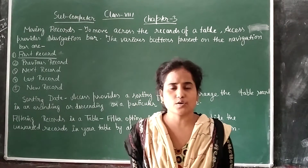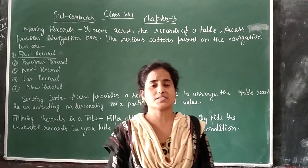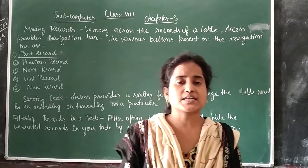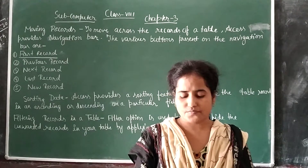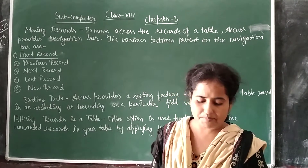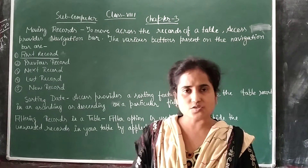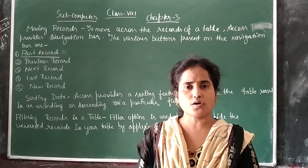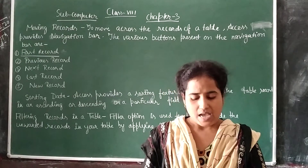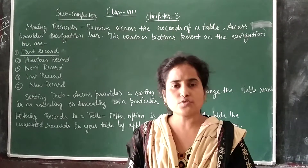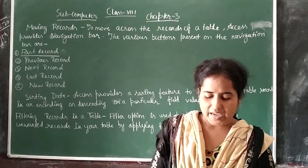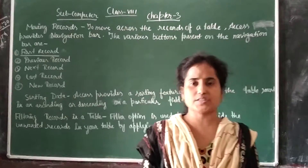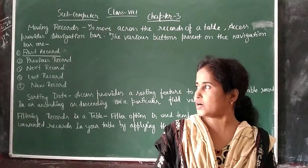Okay students, I hope you all understand this. Try to learn all the shortcut keys given in your book. For example, press Ctrl+F to find data, Ctrl+S to save the database, Ctrl+O to open an existing database, F2 to rename a table, and press Alt+F4 to quit Microsoft Access.